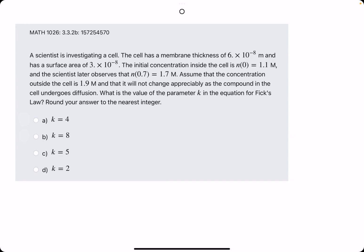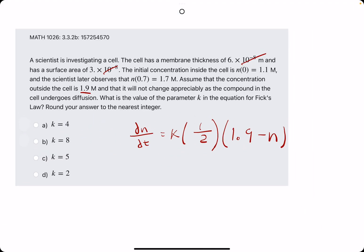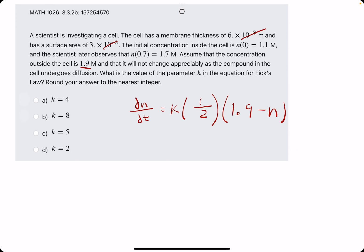Alright, let's give it my best go. Same setup. We want dn over dt equals k times the area 3 over the thickness 6. We don't have to worry about the 10 to the negative 8s. So, 3 over 6 is just 1 half. And then, 1.9 is the outside concentration, minus n. So, it'll always be this initial setup. You can kind of just follow this structure every single time.